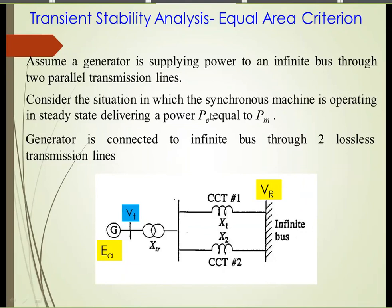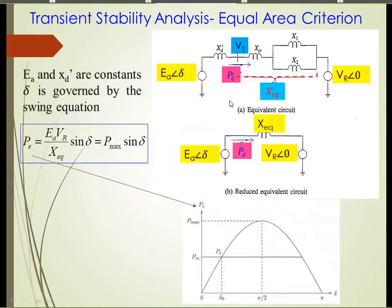Consider the system operating at steady state initial point where electrical power equals mechanical power, and the transmission line is assumed lossless. The equivalent circuit has the generator excitation E_M, reactances of the generator and transmission lines giving an equivalent reactance, and the infinite bus reference voltage. We draw the P-delta characteristic, and for the initial operating point at angle delta_0, we have E_M equal to P_e. This is the pre-fault condition.